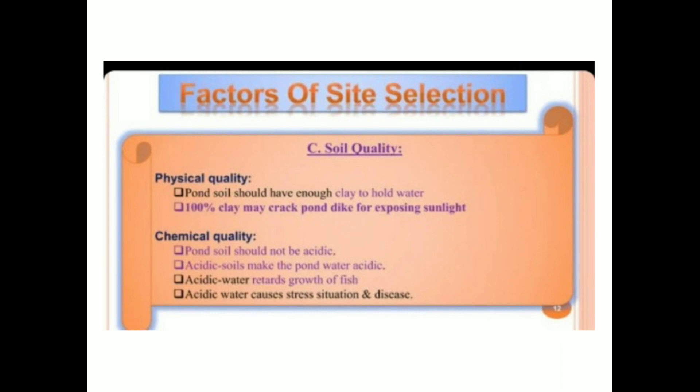The next factor is soil quality. Physically, pond soil should have enough clay to hold water — silty loamy soil is best for dike and pond construction, as it does not allow much percolation. However, 100 percent clay may crack the pond dike when exposed to sunlight. Chemically, pond soil should not be acidic, as acidic soils make pond water acidic, which retards fish growth, causes stress, and leads to disease.